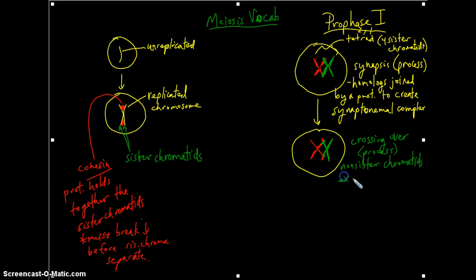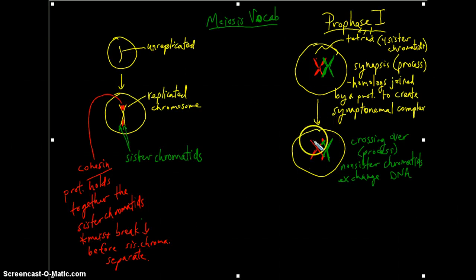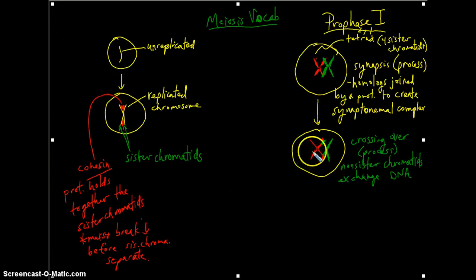Ultimately, this is going to help create greater variation in the potential offspring. Because remember, this DNA, genetic information, is eventually going to go through the rest of meiosis I and meiosis II and create some gametes. And what you're doing is helping sort of shuffle up or exchange information between the original chromosomes to help create greater variability in offspring.